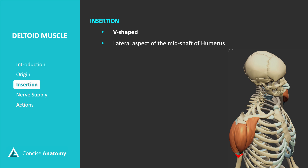The deltoid muscle inserts at the lateral aspect of the midshaft of the humerus, forming a V-shaped attachment. Remember, its origin is also V-shaped, similar to its insertion.